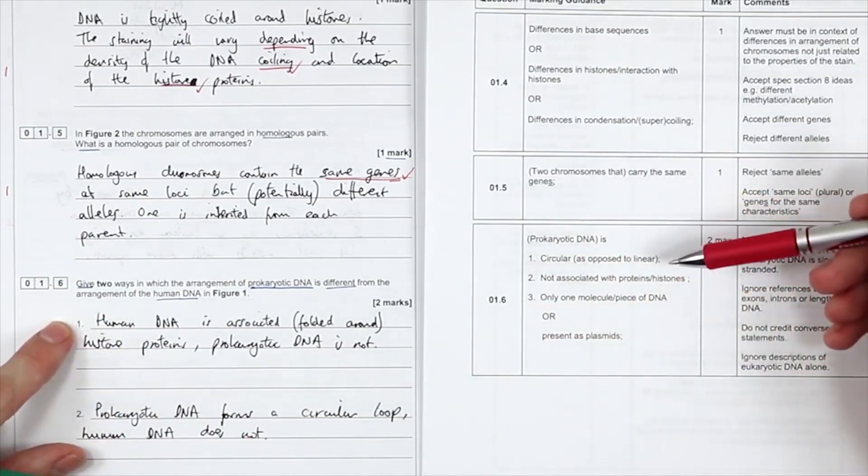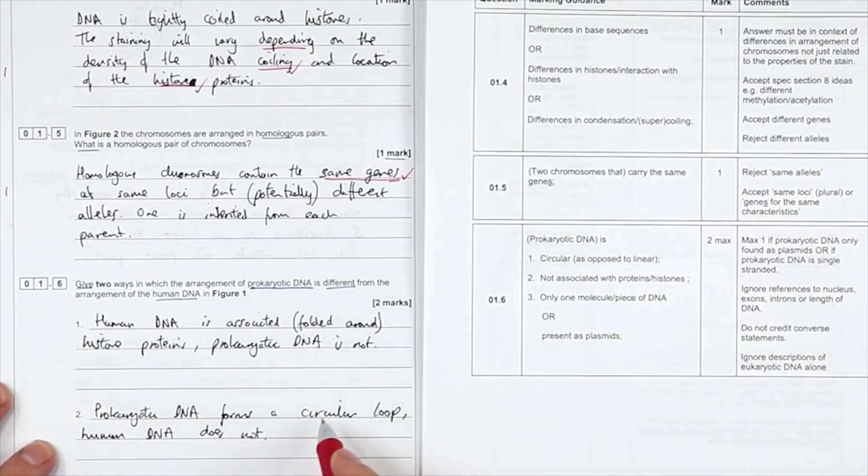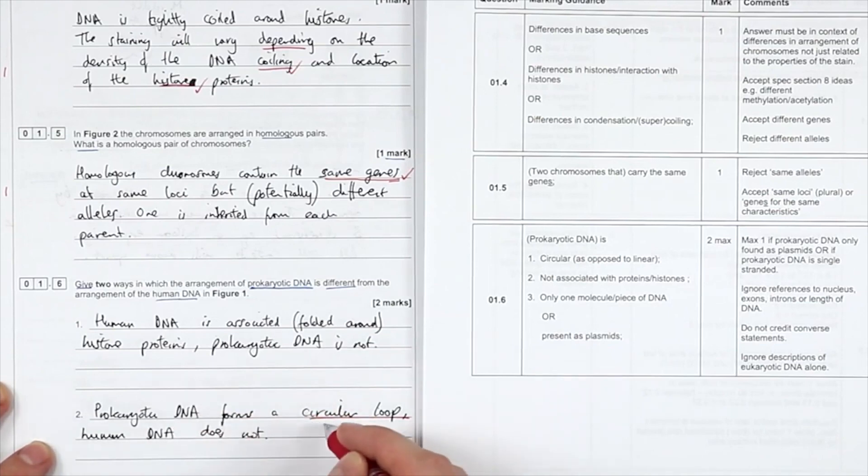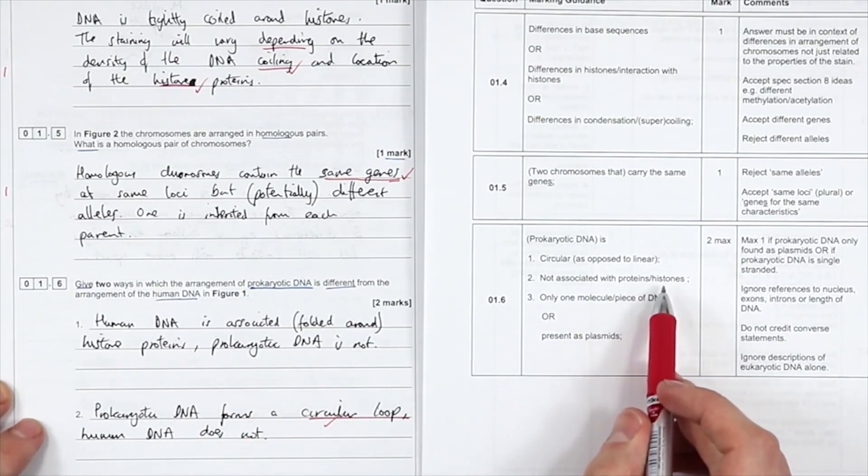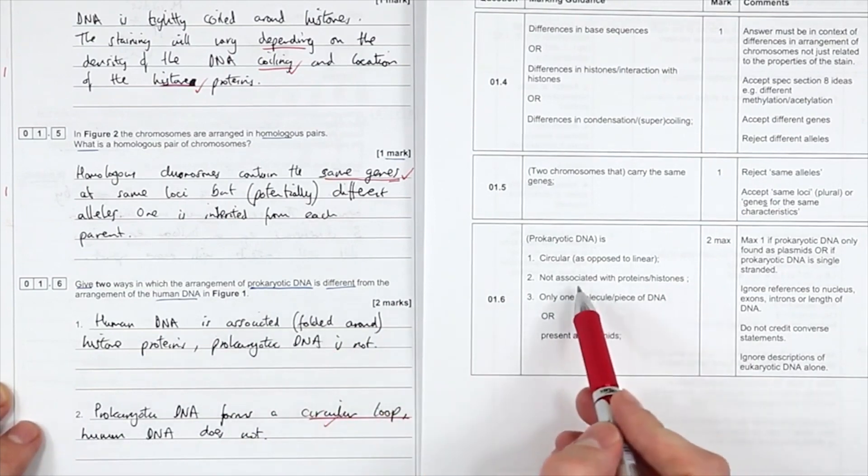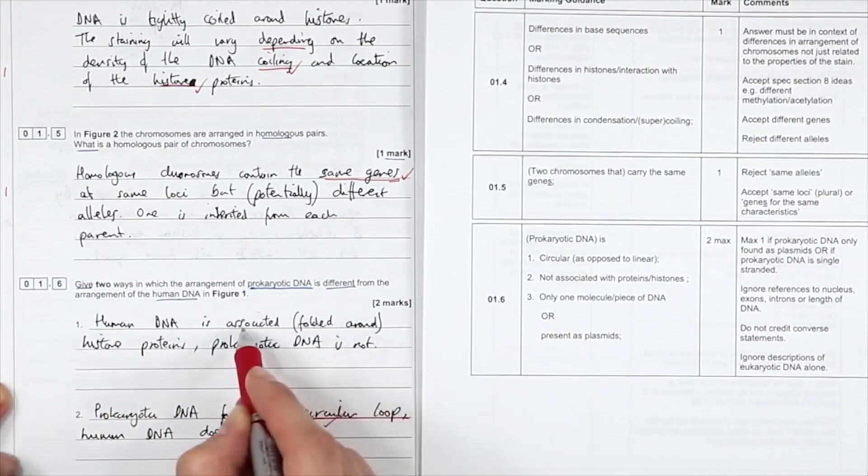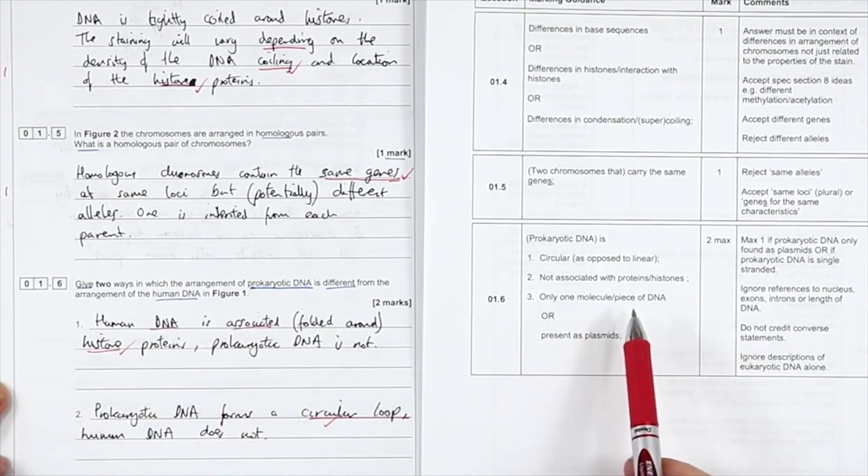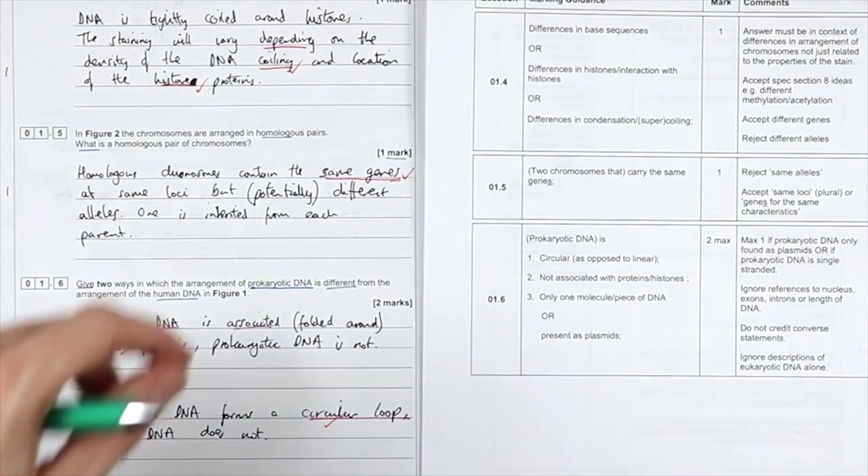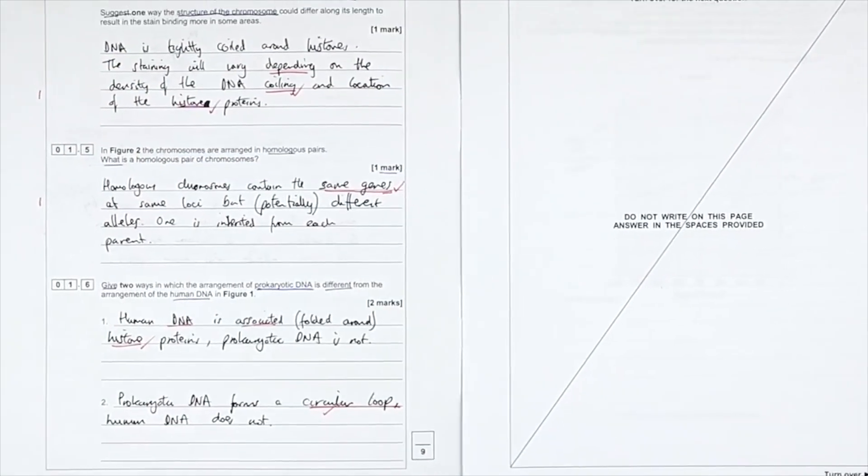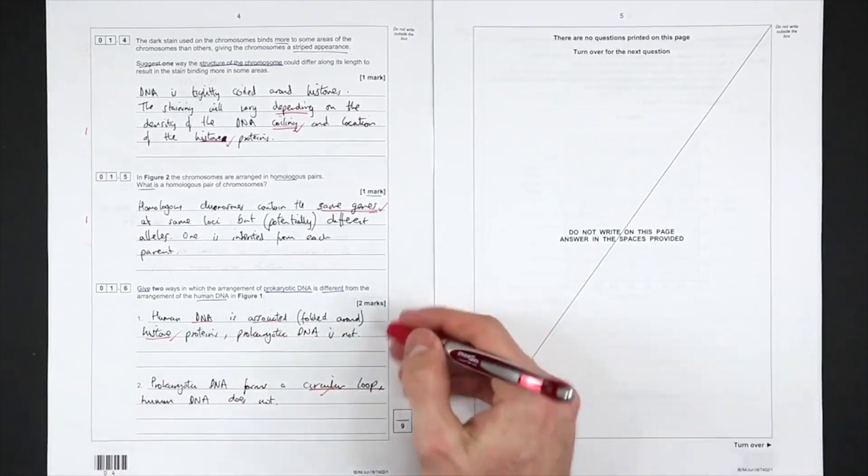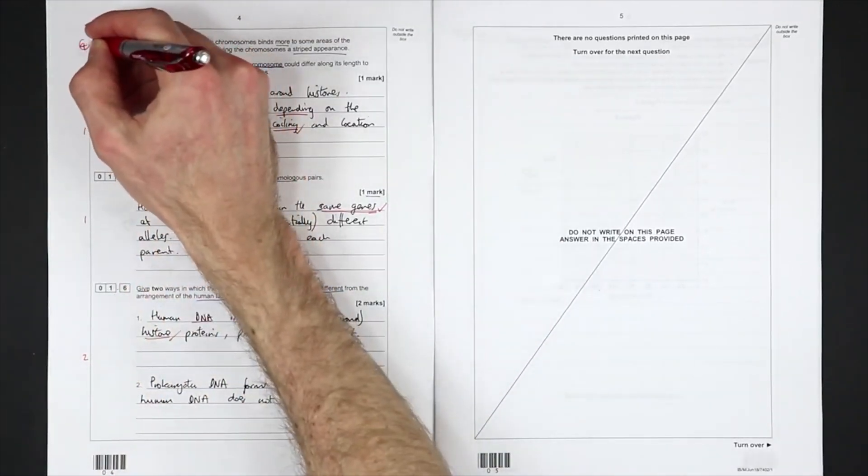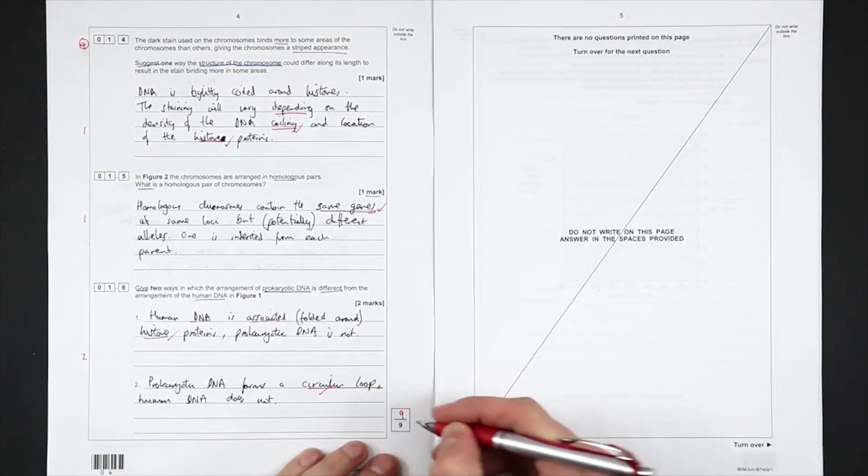And then two differences. Okay, so this again, circular as opposed to linear. Not associated with proteins. They always say associated with, I just know the mark schemes, human DNA associated with histone proteins. What else we got? One molecule or piece of DNA versus multiple plasmids is also present. That's it. So, I don't, I think that was, how many did I get here? This was two, giving four on this page. And I think that was a clean sweep for question number one.